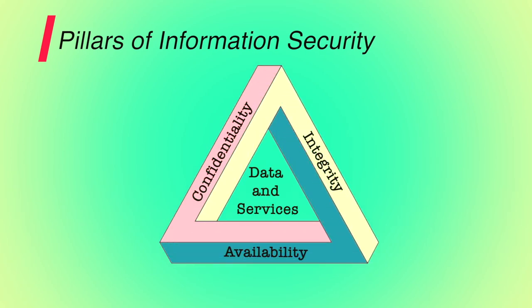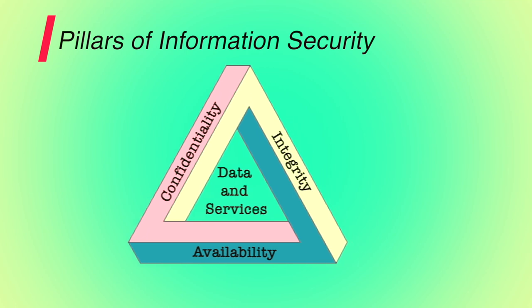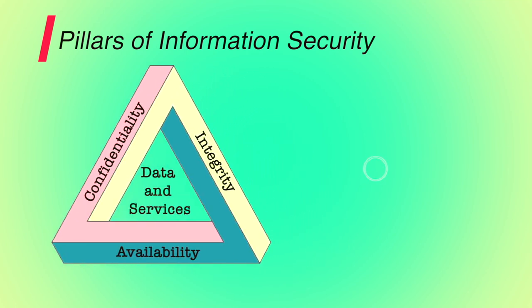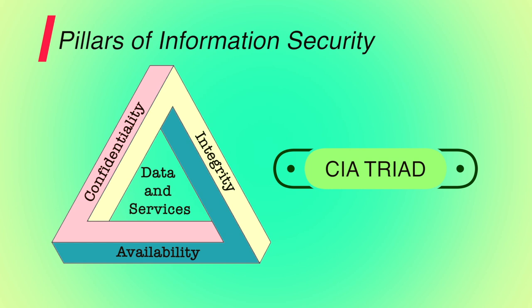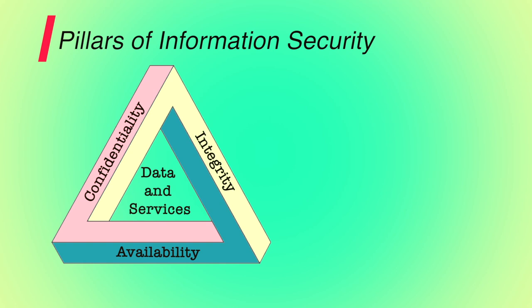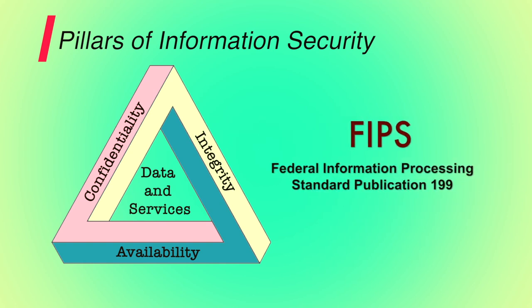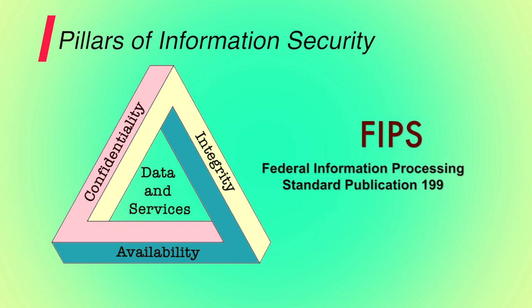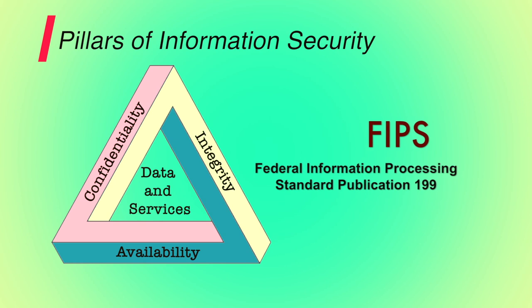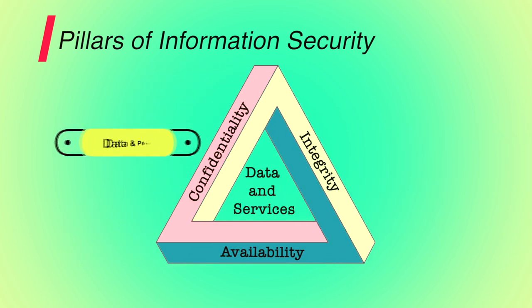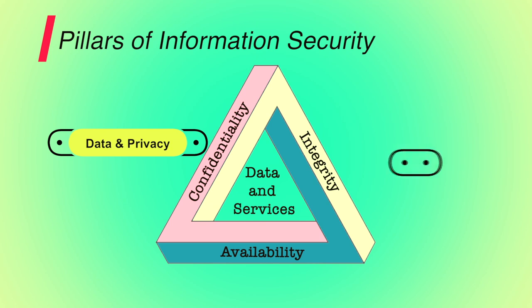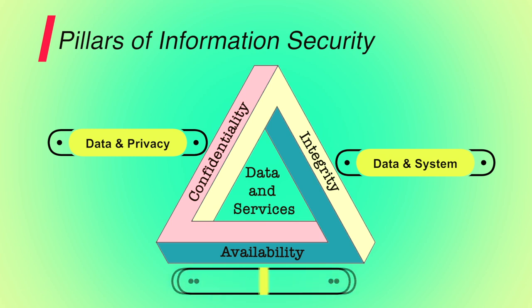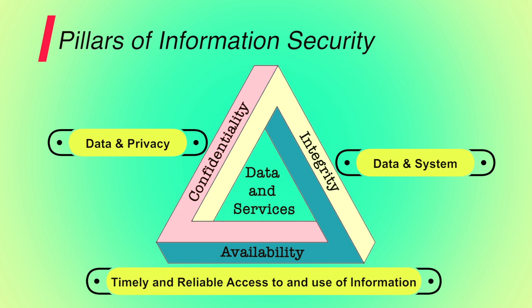Information security rests on three main pillars: confidentiality, integrity and availability. These three pillars form what is often referred to as the CIA triad. The three concepts embody the fundamental security objectives for both data and computing services. FIPS PUB 199 provides a useful characterization of these three objectives. Confidentiality covers both data confidentiality and privacy. Integrity covers both data and system integrity. And availability ensures timely and reliable access to and use of information.